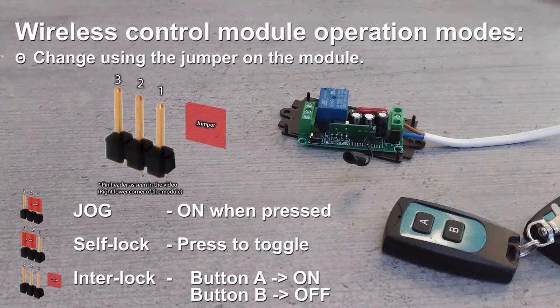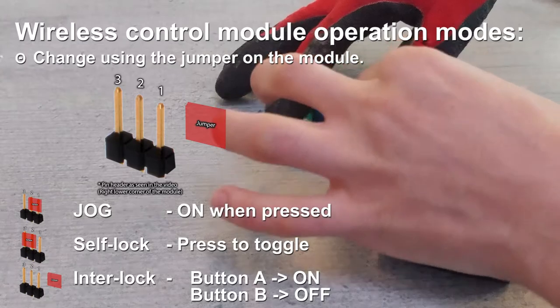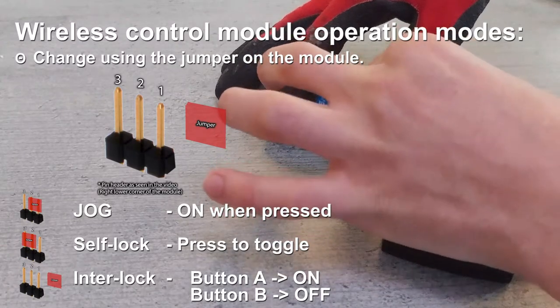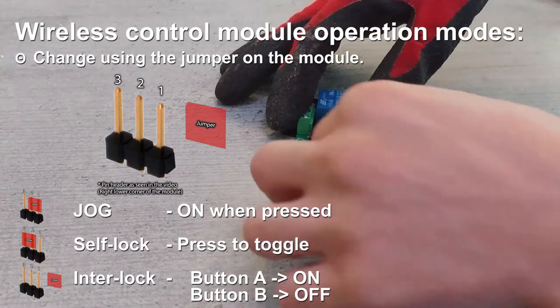There are three different modes: jog, top lock and interlock. To change modes you have to set the jumper on the module to the correct position.